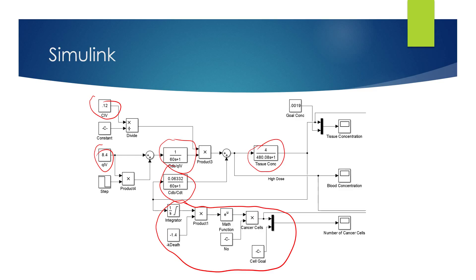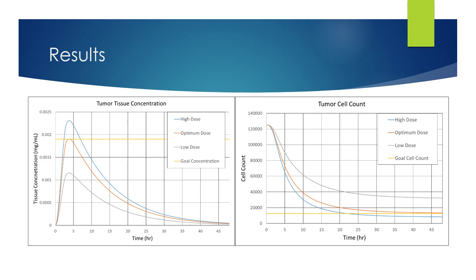And so from that, we were able to do a number of different tests with different concentrations and got our following results. So here you see our results. The graph on the left clearly shows tumor tissue concentration. The y-axis shows the concentration of drug in milligrams per milliliter in the tissue. The x-axis is time in hours.